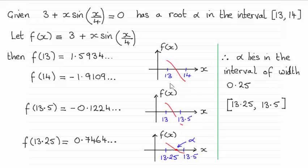So first of all, what I did was try f of 13 just to see what sign it was. Working in radians mode on your calculator, it comes out at 1.5934 and so on, essentially a positive value. And when you do f of 14, you can see it comes out a negative value.